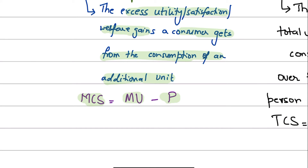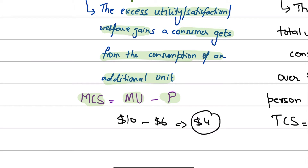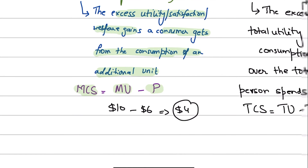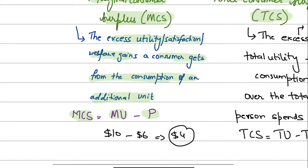Marginal consumer surplus is the excess utility or extra satisfaction a consumer gets from consuming an additional unit. The formula is: Marginal Consumer Surplus = MU minus P. So if you value a product at ten dollars — meaning the utility you'll gain is ten dollars — and you pay six dollars for it, your marginal consumer surplus is four dollars. That's your excess satisfaction gained by paying less for something worth more to you.